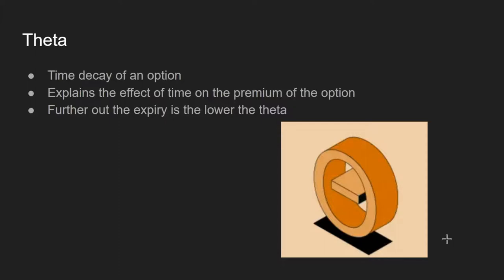A contract with a further-out expiry has a lower Theta because you have more time on the contract. For a monthly, Theta won't be too bad, but for a weekly the Theta will be pretty high because you're getting near expiration and not many people want to buy it. The amount that the contract loses value each day goes up and up as you get closer to that expiration date.